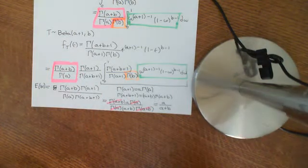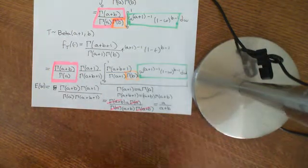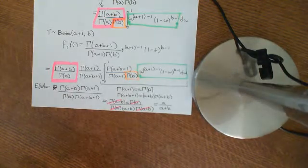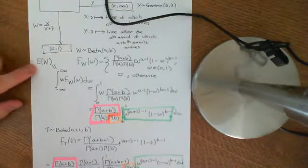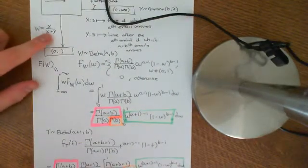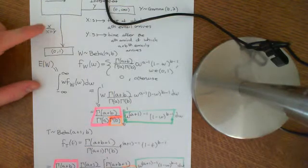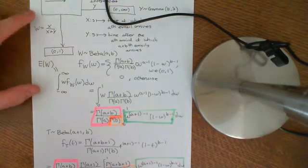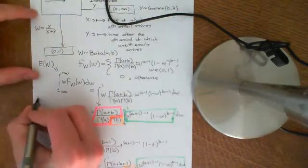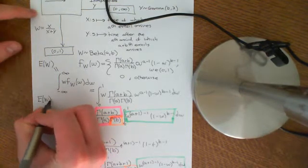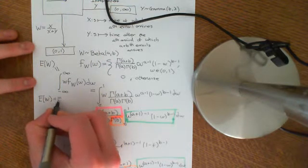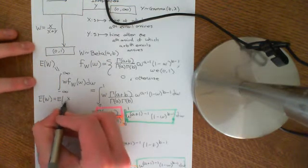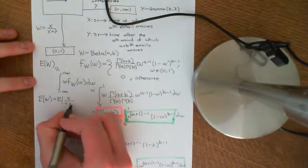Welcome to this next video in which we are going to look at another way in which we can calculate the expected value of a beta distribution. The other way we can do it is by remembering that W is in fact equal to X divided by X plus Y. What we're going to do is say that the expected value of W, which is our random variable beta distributed A,B, is therefore equal to the expected value of X divided by X plus Y.